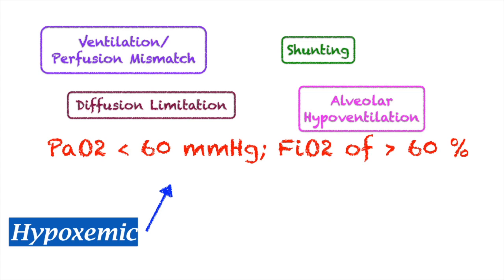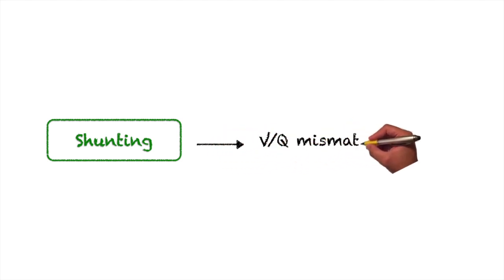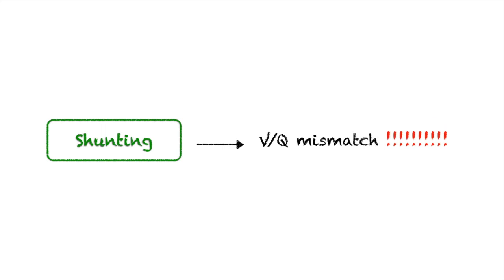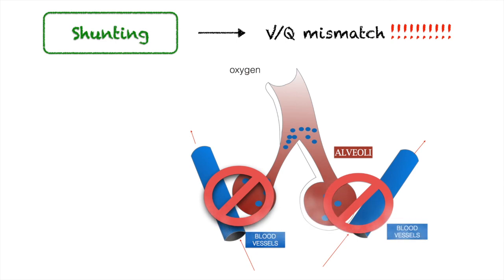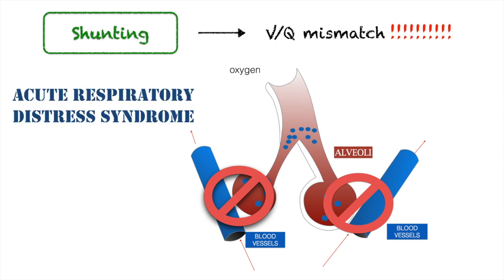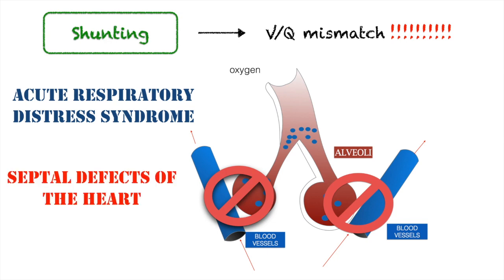Another physiologic event in hypoxemic respiratory failure is shunting. Think of shunting as an exaggerated VQ mismatch — there is no gas exchange happening at all. The blood exits the heart without participating in gas exchange. This can be caused by conditions such as acute respiratory distress syndrome and septal defects of the heart.